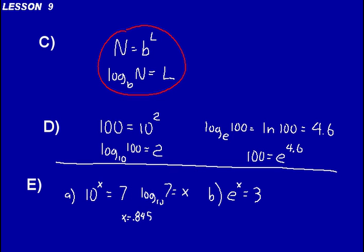So 10 to the 0.845 should equal 7. You can check your work on your graphing calculator. If you have the TI-83+, hit the second button, then hit log again, and you'll see 10 with a little chevron mark and a parenthesis. Enter 0.845, close the parenthesis, or just hit enter. We rounded our previous answer, so it should get us close to 7 — I got 6.998 as a result. That's always a way to check your work: go backwards using second-log, which gives you the base raised to the exponent.